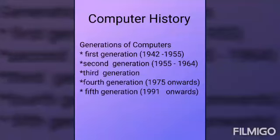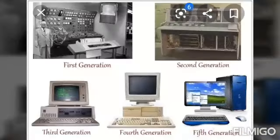We are going to see about Generations of Computers and their time periods. That is 1st generation, 2nd generation, 3rd generation, 4th generation and 5th generation. The pictures of computers are shown. See the pictures of 1st generation, 2nd generation, 3rd generation, 4th generation and 5th generation.